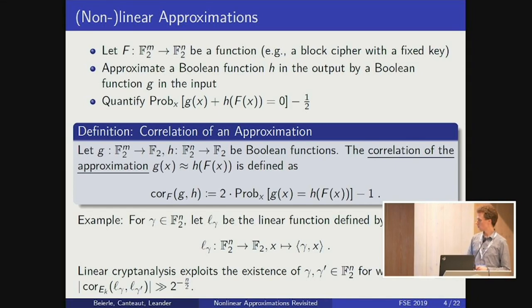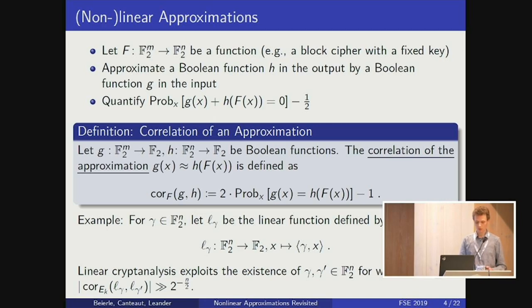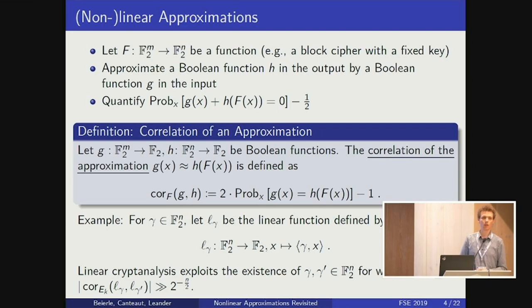For these two functions g and h, the correlation is defined as two times the probability that these are equal minus 1, so the correlation is a value between minus 1 and 1. As an example, in linear cryptanalysis, g and h are defined to be linear functions given by a mask gamma as an n-bit vector, where the linear function is defined as the inner product of gamma with x. Linear cryptanalysis exploits the existence of an input mask gamma and output mask gamma prime for which the correlation of the fixed key instance is larger than 2 to the minus half of the block size — the threshold needed for attacks depending on data complexity.